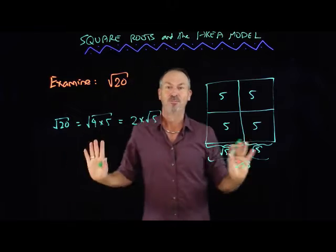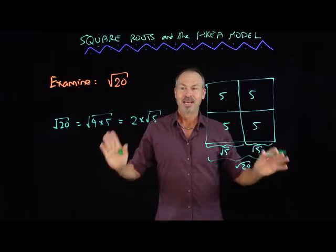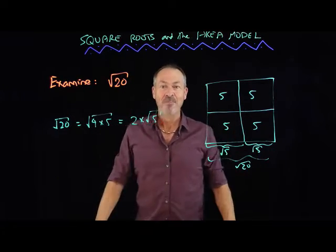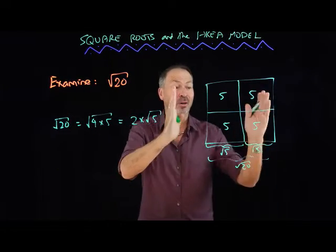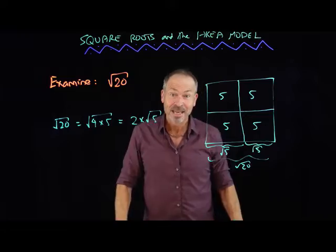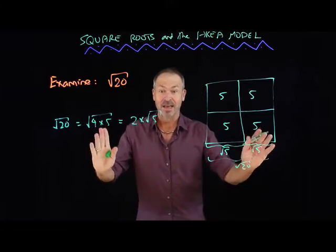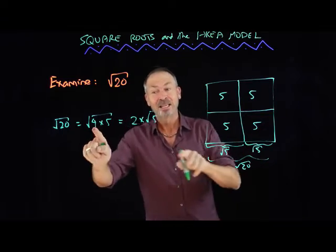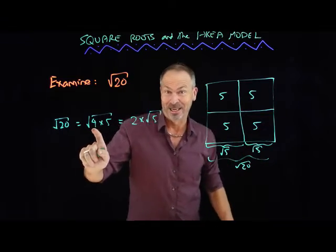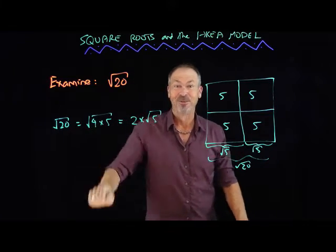Beautiful. Young students are taught to do this all the time, and the area model gives a lovely way of seeing and justifying that — at least when one of the factors is a perfect square.